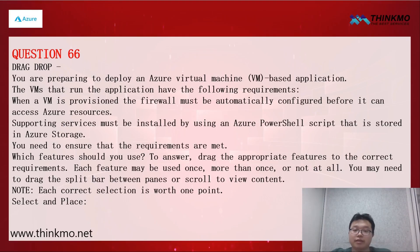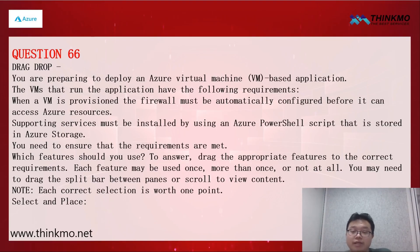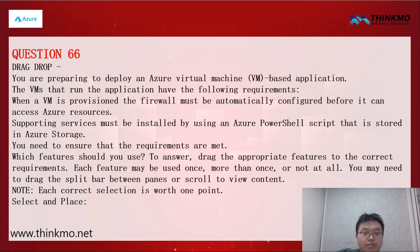For question 66, we're preparing to deploy an application based on Microsoft virtual machines. The virtual machines running this application need to meet the following requirements. First, when our VM is deployed, our firewall must be automatically configured before it accesses Microsoft cloud resources. We must use a PowerShell script stored in Microsoft storage to install the knowledge service. Which feature should we use to meet these requirements?